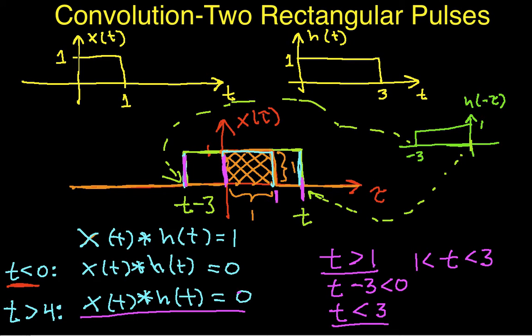So we combine these two results, and we have that T between 1 and 3. If this is true, that means that the convolution of these two guys is 1. So we can add that to our list of results: 1 is less than T, which is less than 3. We're at the point where we know what happens when T is less than 0, we know what happens when T is greater than 4, and we know what happens when T is between 1 and 3. So really all we need to figure out is what happens when T is between 0 and 1, and what happens when T is between 3 and 4.